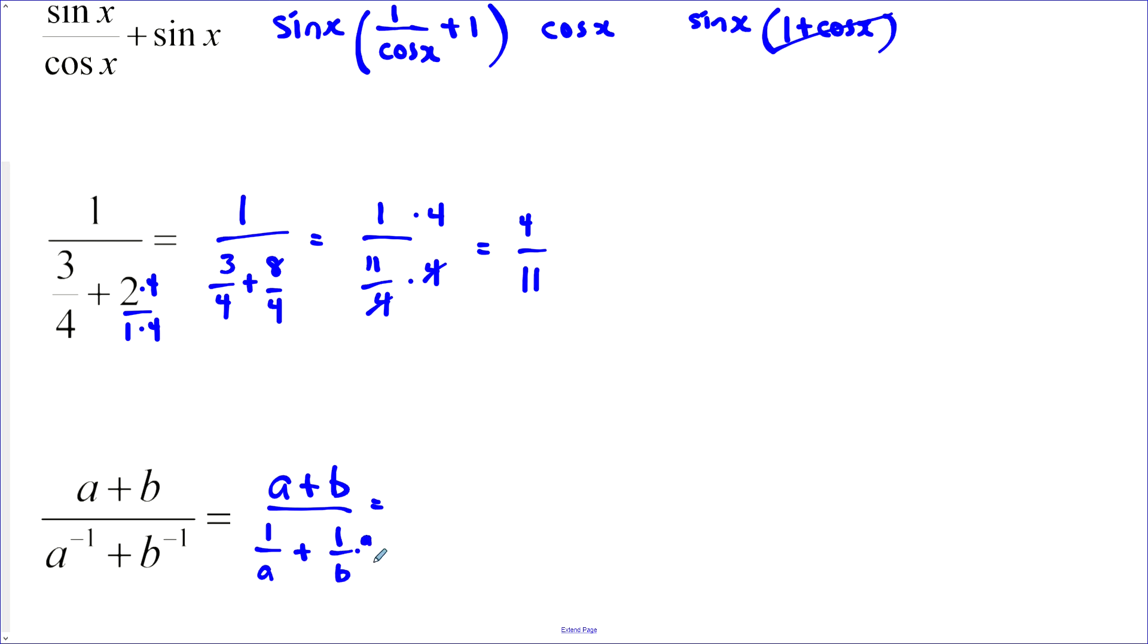So, multiply this one by a over a, and multiply this one by b over b. Now, we've got a common denominator, and we can add these together. So, in here we've got b plus a over a times b. Now, this is our big fraction bar here. So, I'm going to draw it a bit thicker, and this fraction is in our denominator.